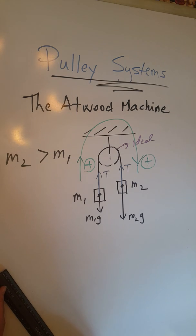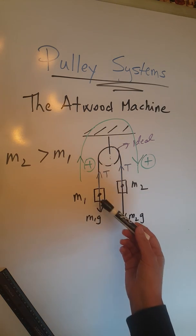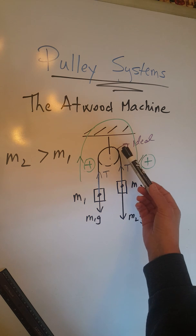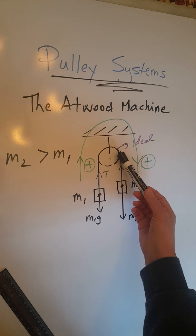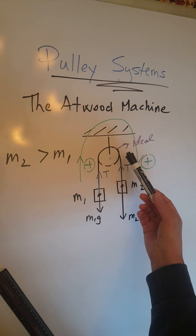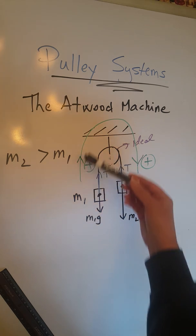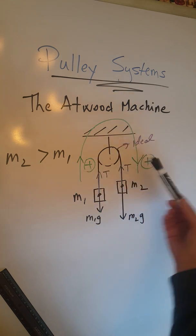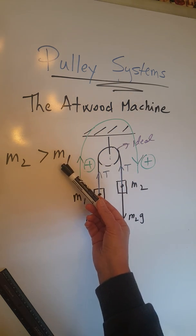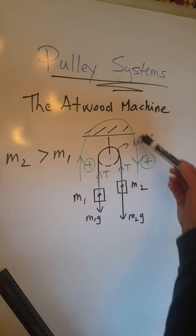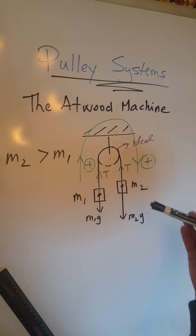We have finished the free body diagram for this pulley system for both objects. Remember, the pulley is ideal — no mass, no friction. We also performed the magnitude check for both objects, considering the condition that m2 is greater than m1, which means the whole system must accelerate clockwise.